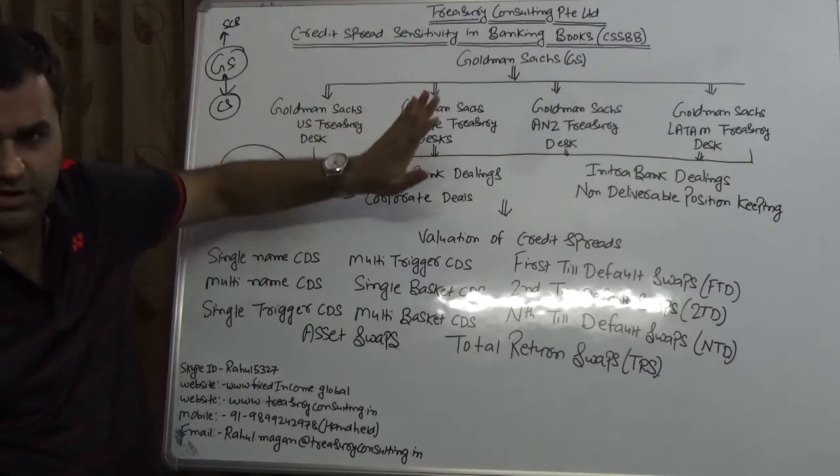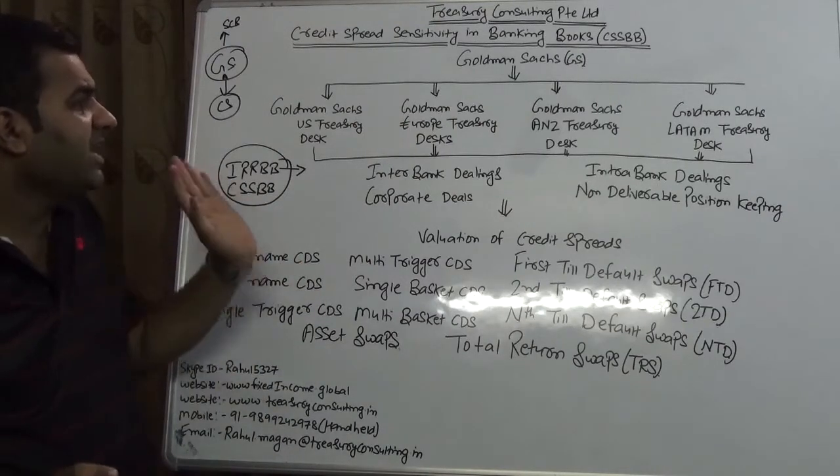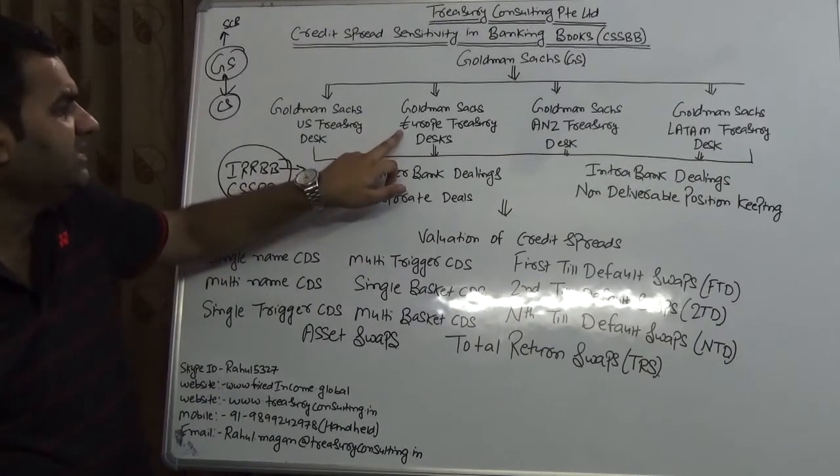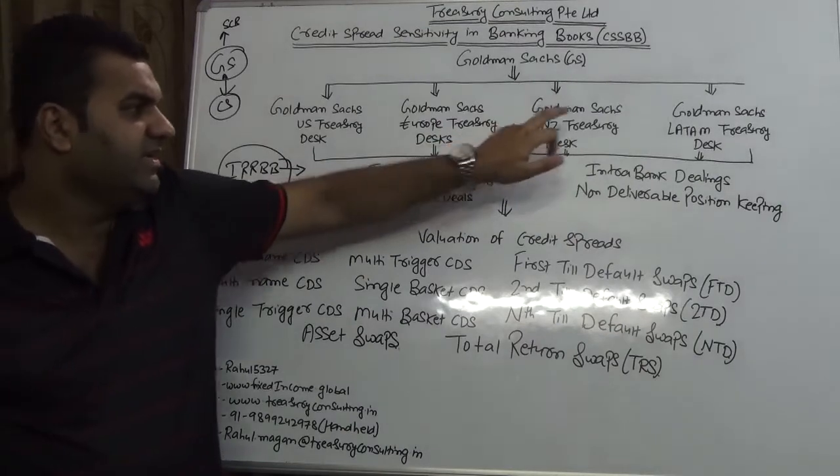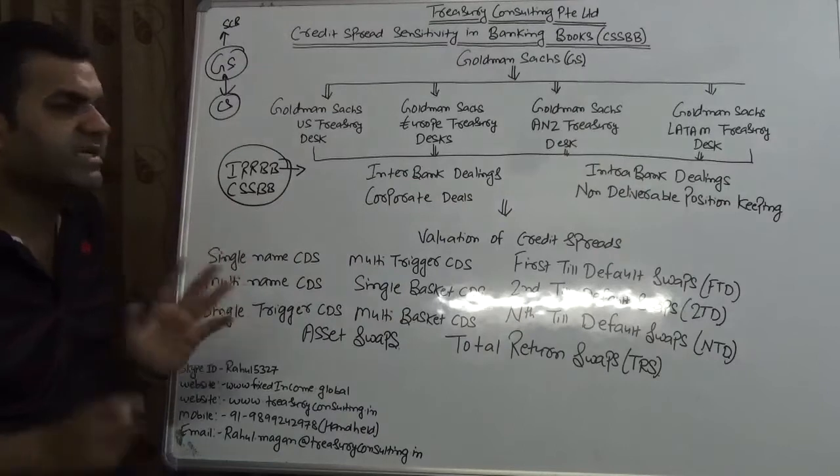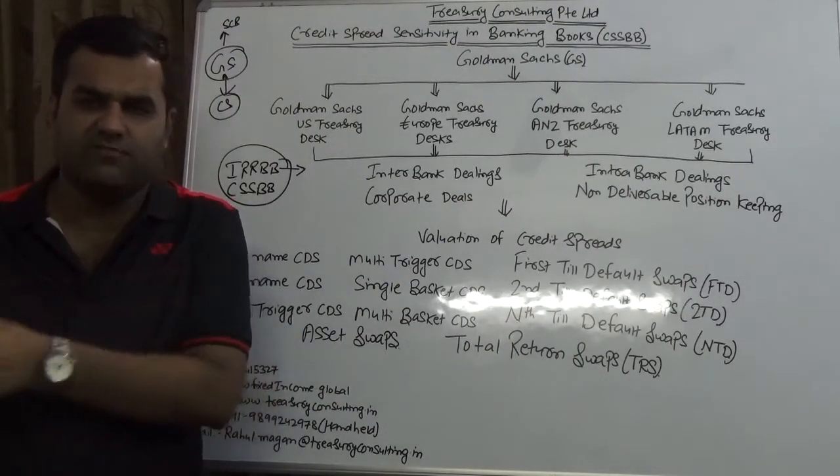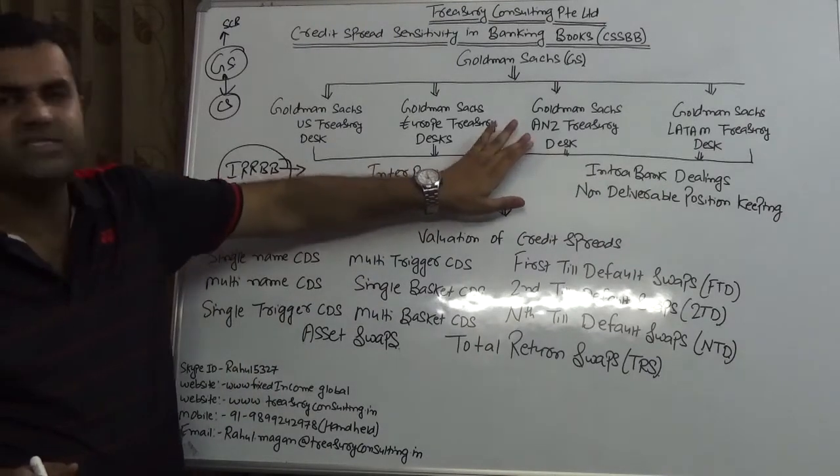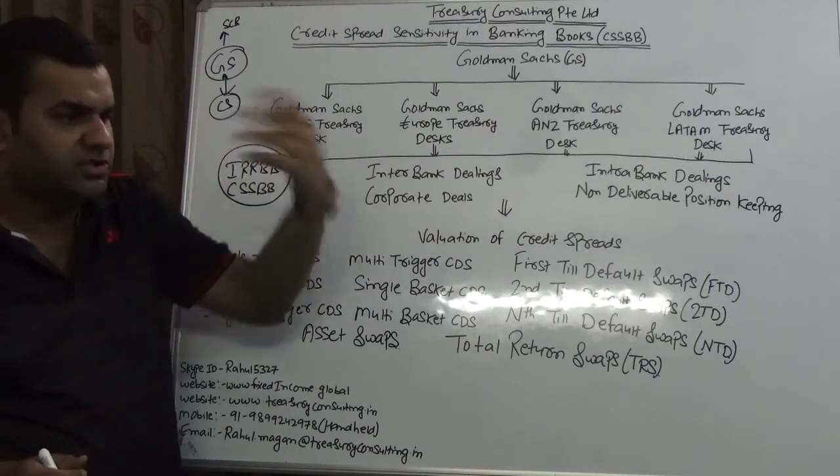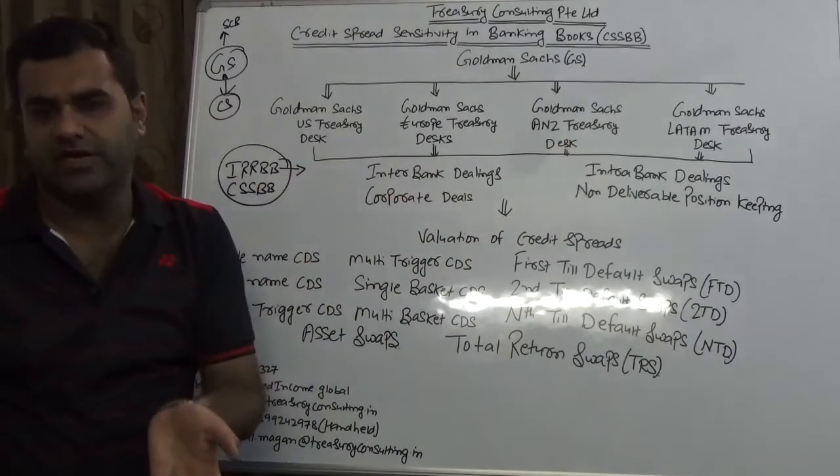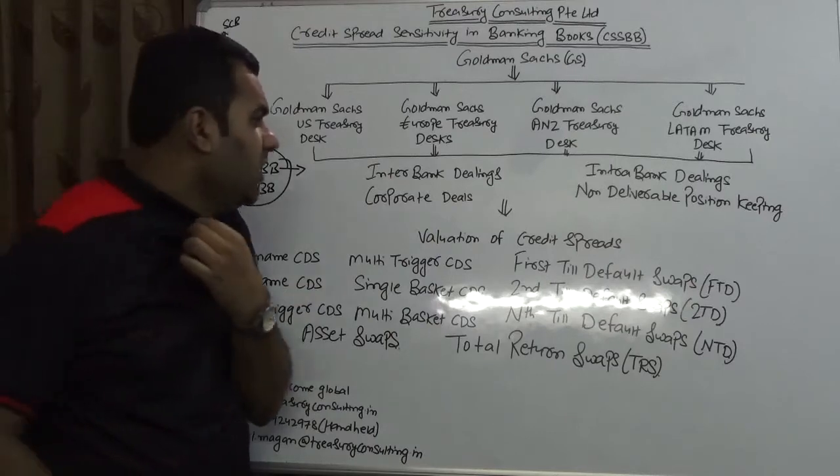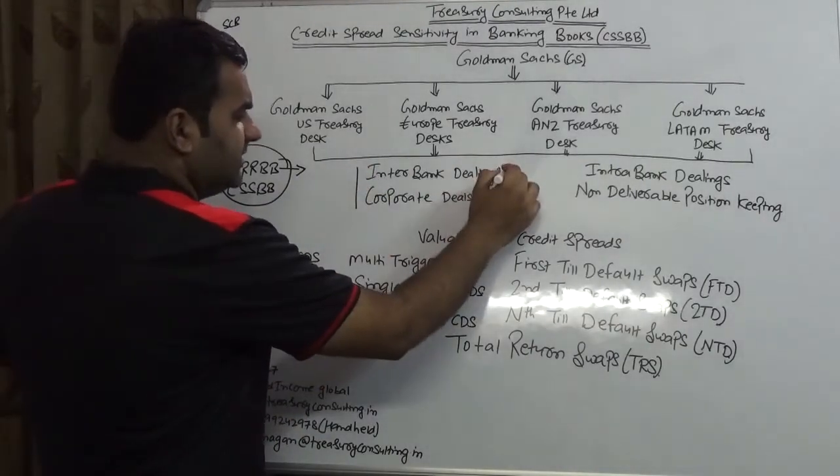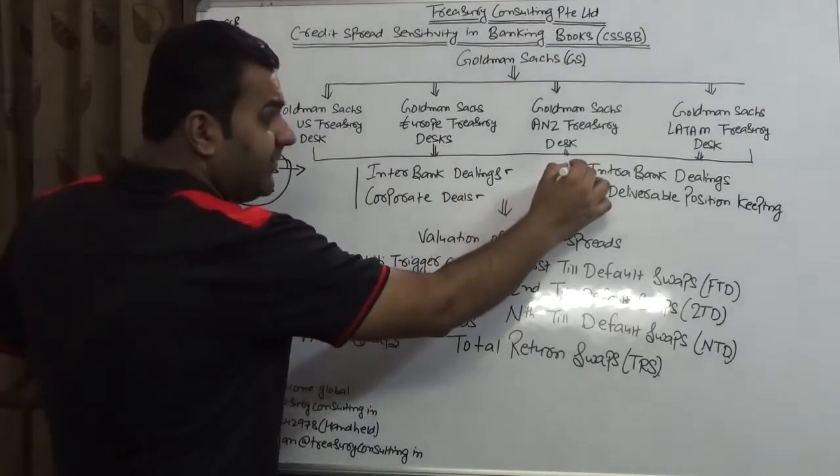So here we are taking an example of Goldman Sachs which is number one bank in United States. They don't need any introduction as far as this entire planet is concerned. We have taken five treasury desks of Goldman Sachs and all treasury desks are playing their independent role. Example: Goldman Sachs US Treasury desk, Goldman Sachs European Treasury desk, Goldman Sachs ANZ, Goldman Sachs Latin - Latin stands for Latin America. Now in US there are so many states like Philadelphia, Texas, California. In Europe also Denmark, Sweden, London. ANZ - not to mention Australia, New Zealand, Singapore, Thailand, Philippines, Tokyo. Latam stands for Latin America - Brazil and all these kind of countries. Now they have so many clients which they are dealing with. I have bifurcated this into four categories: one is interbank dealings, one is corporate deals, one is intrabank dealings.